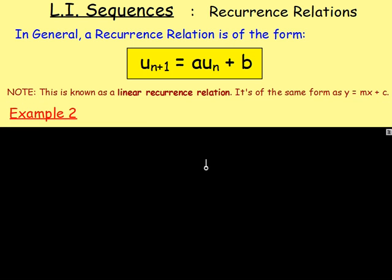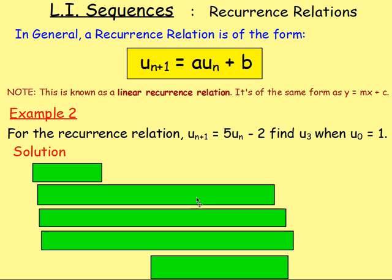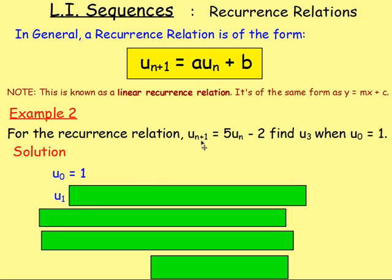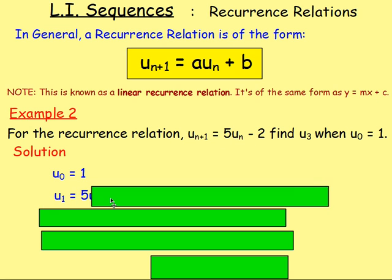So example 2. These are the sort of questions that you would get. So examples 2, 3, and 4, this is the sort of thing you have to answer, okay? This is the start of recurrence relations. So we've got UN plus 1 equals 5UN minus 2. Find U3 when U0 equals 1. So to do that, well, we're told U0 equals 1. So we know this first term is going to be 1. After that, we want to work out the next term, which will be U1. And it tells you here to work out the next term, you do 5 times the previous term, take away 2. So that's going to be 5 times U0, take away 2.